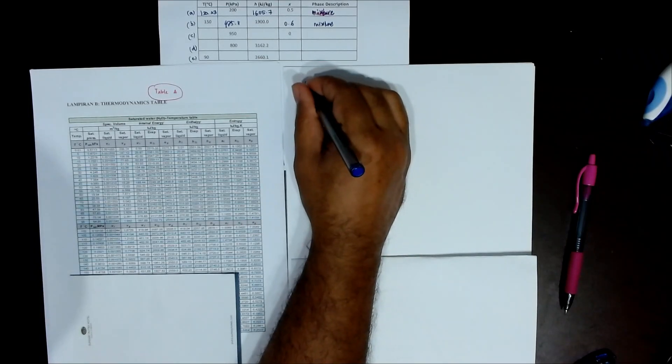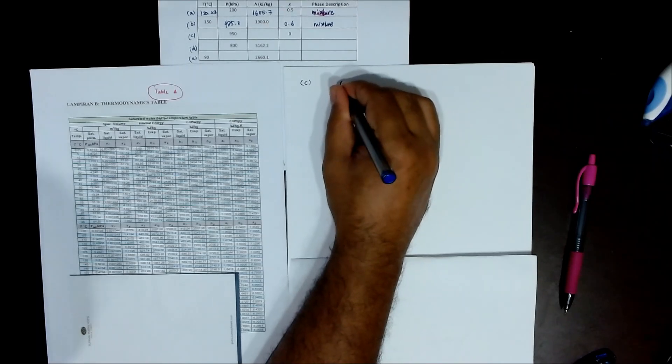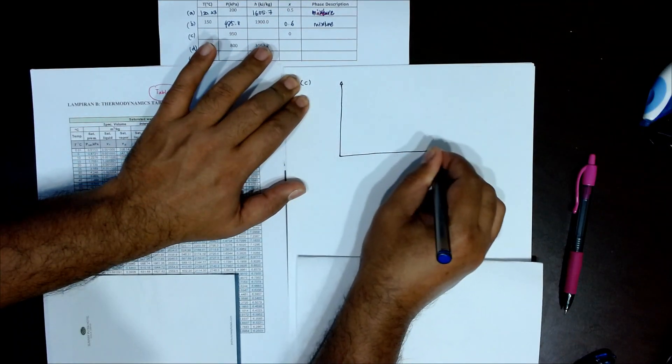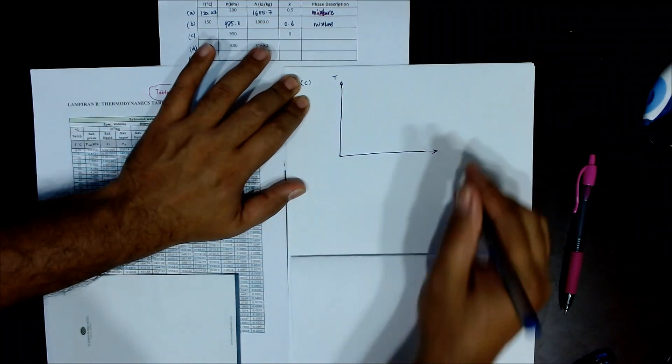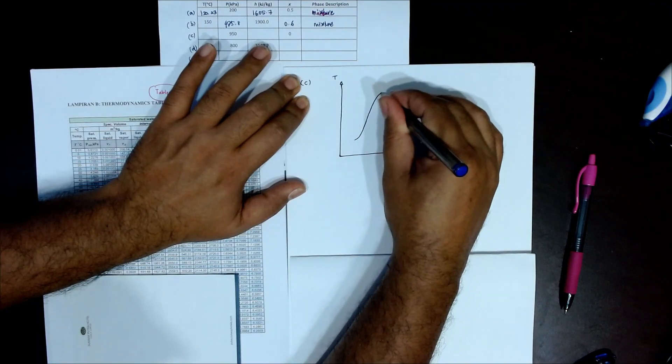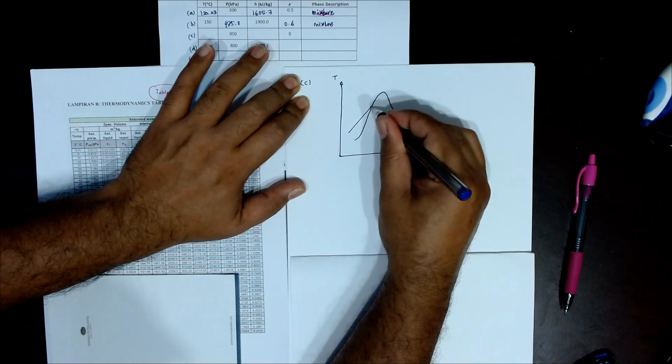Now let's solve part C. Start with the dv diagram - always draw the dv diagram. Draw d and then v. Draw the saturated liquid line, saturated vapor line, and a straight line for pressure.